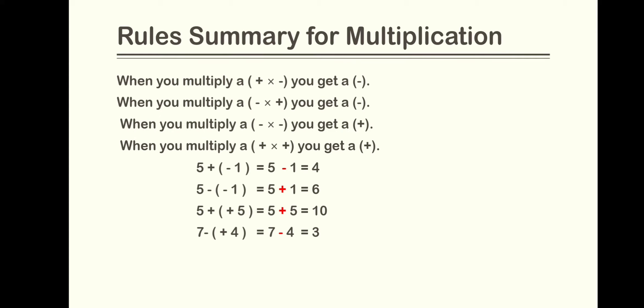Rules summary for multiplication. When you multiply a positive multiply a negative, you get a negative. When you multiply a negative multiply a positive, you get a negative. When you multiply a negative multiply a negative, you get a positive.